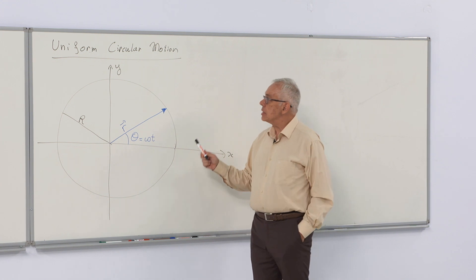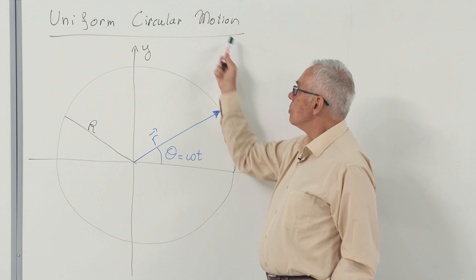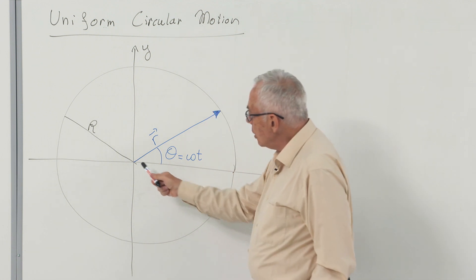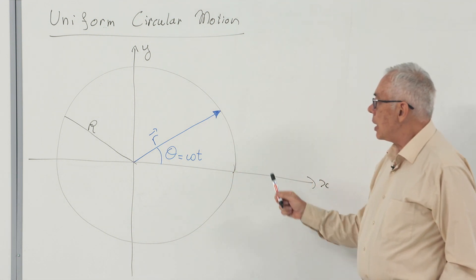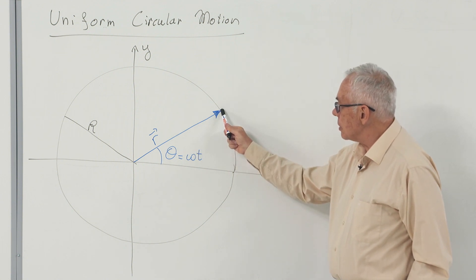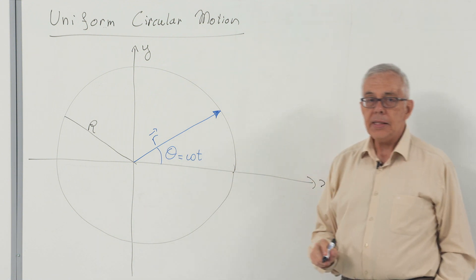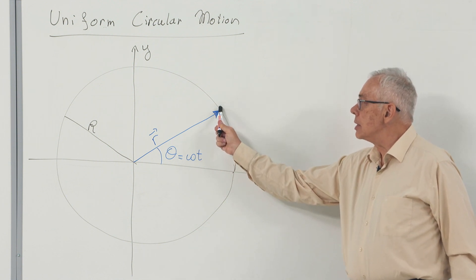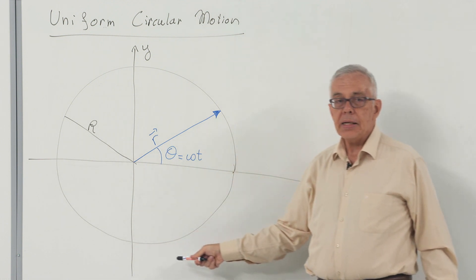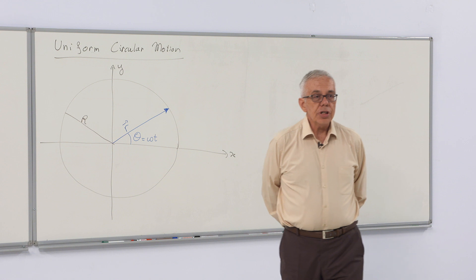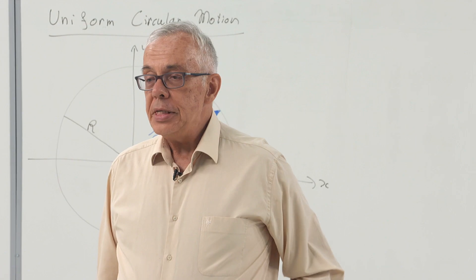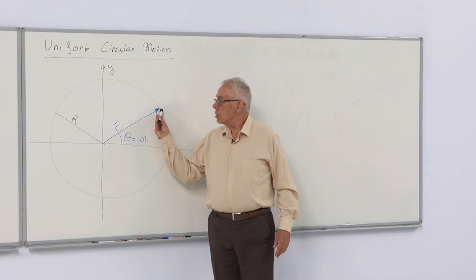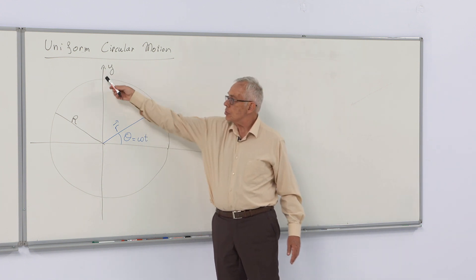The next motion we are going to investigate is uniform circular motion. Here we have the motion on a circle of radius r. We place the center of the circle on the origin, and we denote the angle between where the particle is and the x-axis as theta. The motion is uniform if theta is increasing at a constant rate, just like the tip of the minute or second arm of a clock — except here the motion is in the other direction.